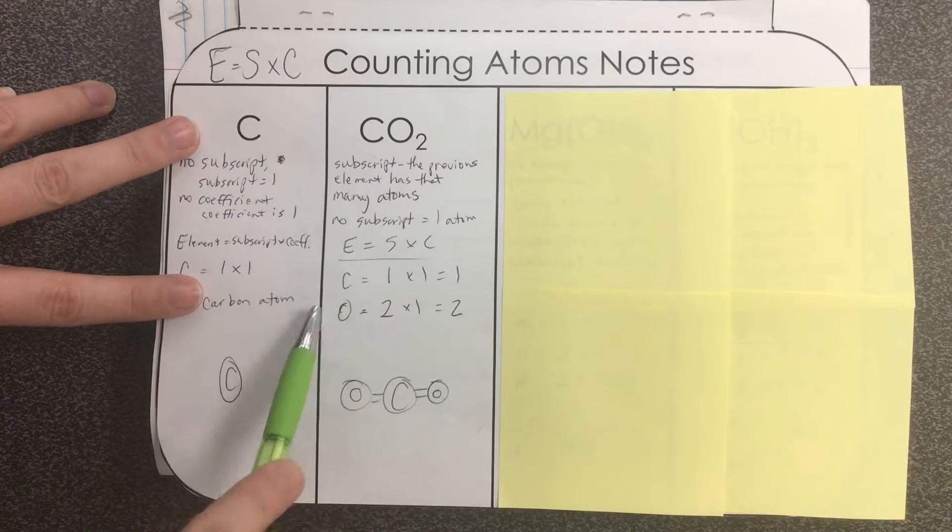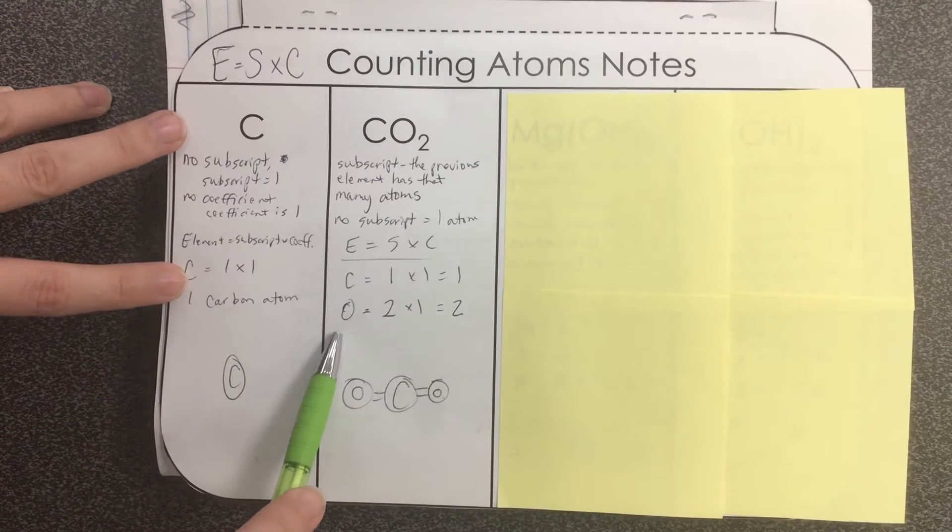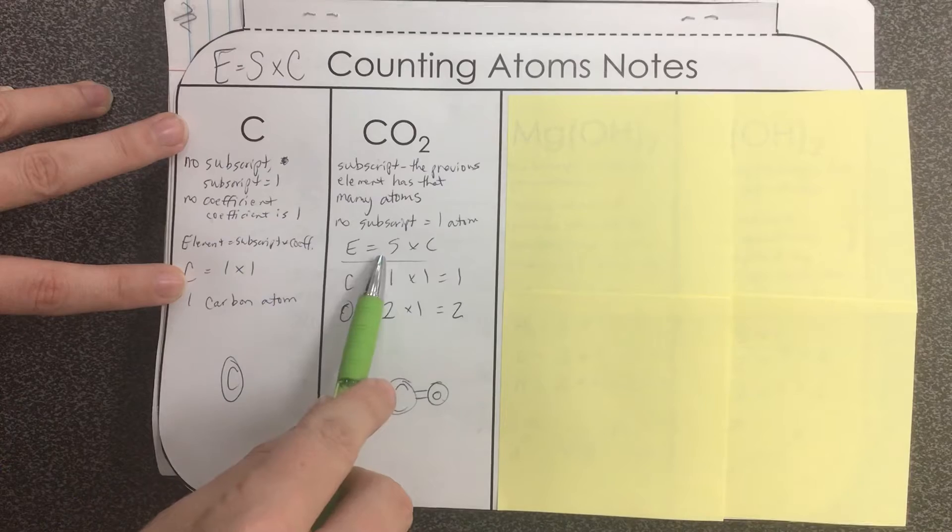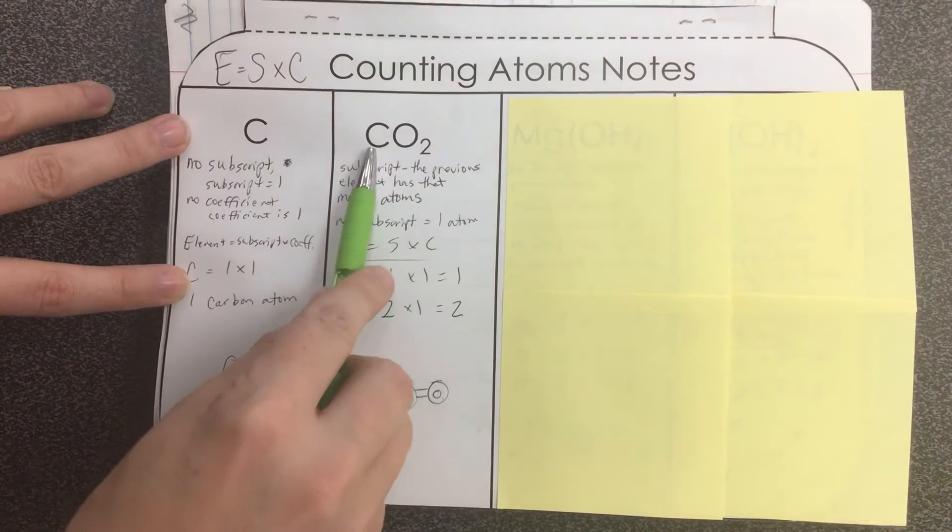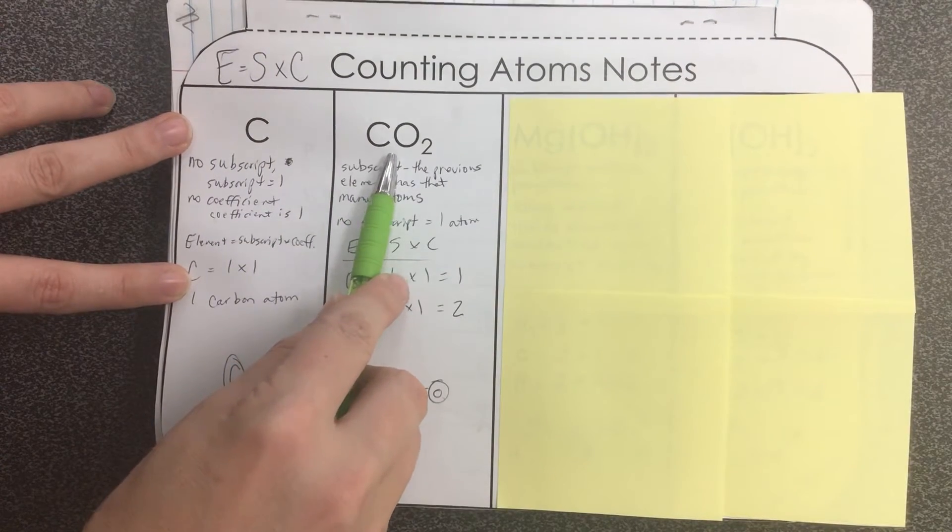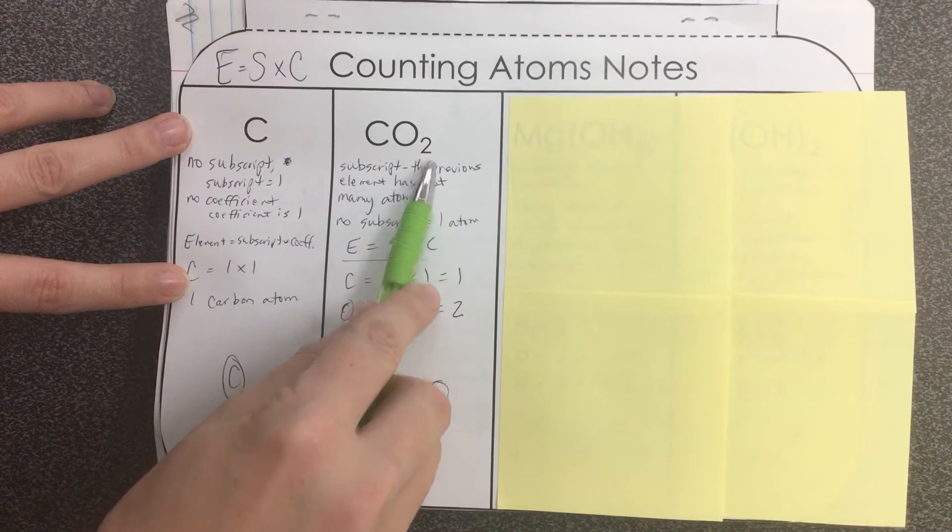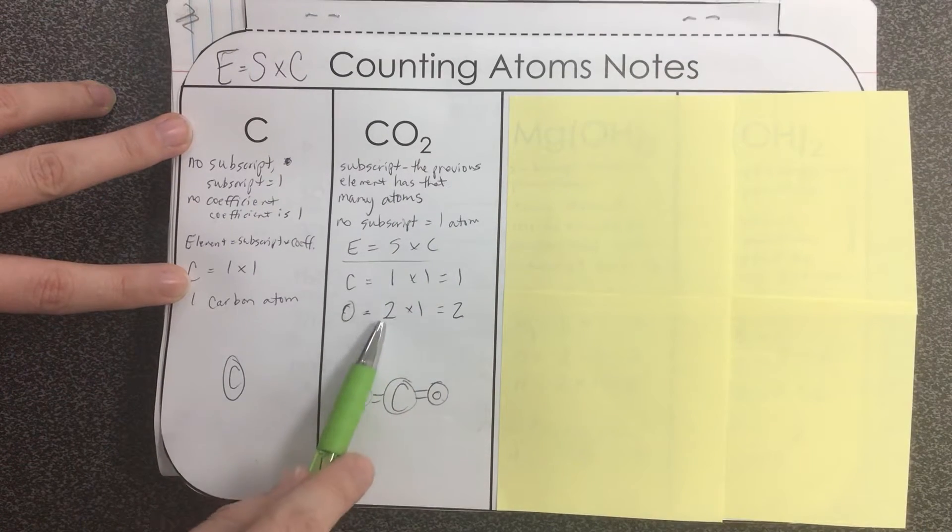So for my elements I list them: carbon and oxygen. Then my subscript for carbon, since it is present, it's one. And oxygen, the subscript here is two. So one there and two there.